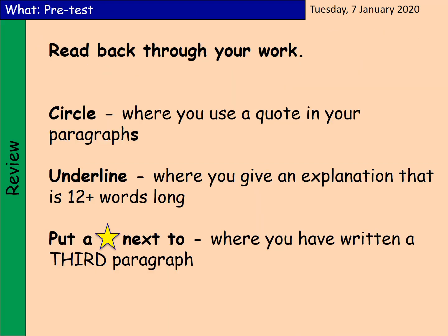Hopefully you found that quite straightforward, as we had explored quite a lot of the quotations. Now, to identify what you have done: circle where you used a quote in your paragraph; underline where you gave an explanation that's 12 or more words long; and then put a super yellow star next to where you've written a third paragraph. Once you've done all that, collate your work together and send it through to your English teacher. Thank you, Year 7s.